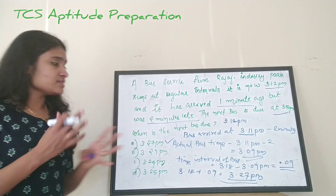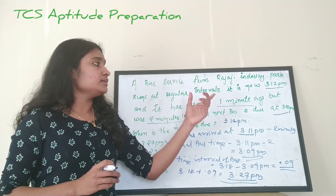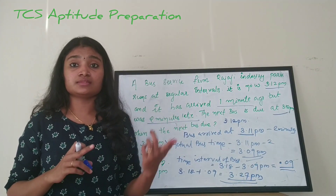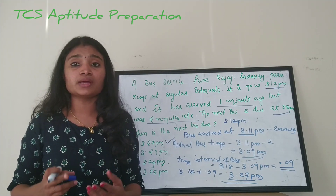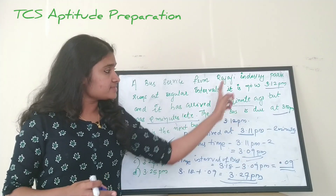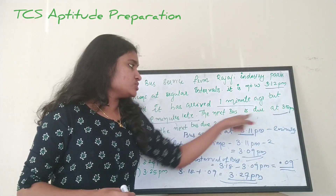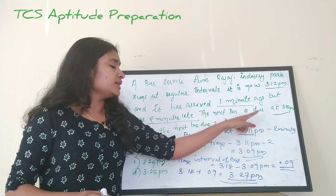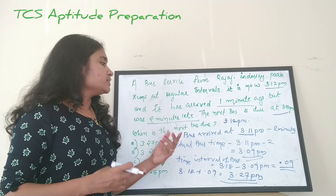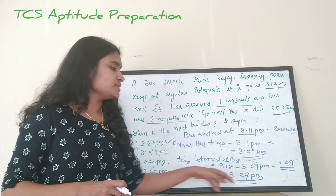To summarize this problem: the current time is 3:12 PM, the bus arrived at 3:11 but was two minutes late so its actual schedule was 3:09 PM. The next due time is 3:18 PM, giving us a 9-minute interval. Adding 9 minutes to 3:18 PM tells us the next bus is due at 3:27 PM.